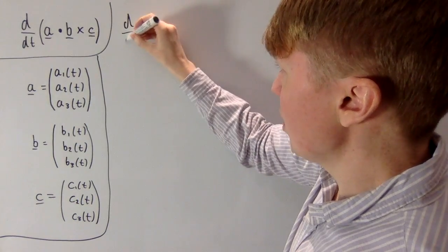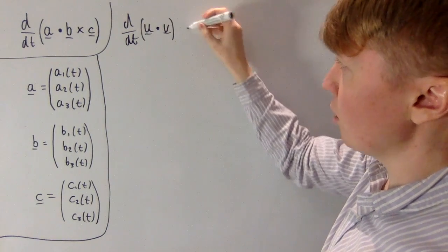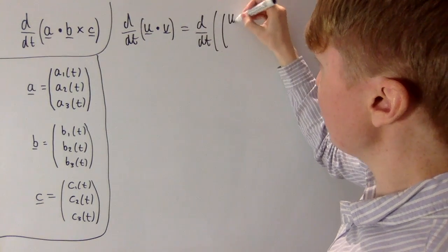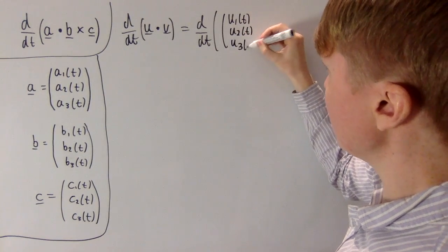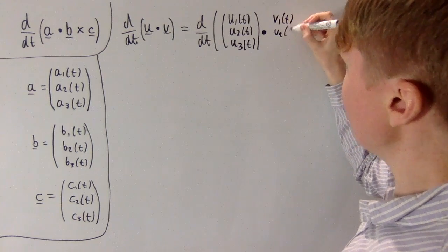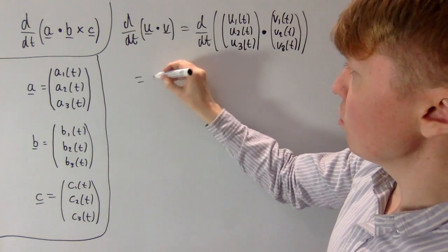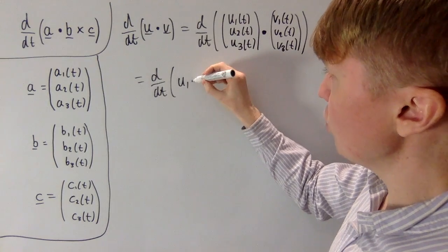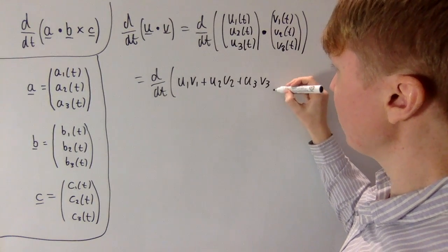Let's introduce two generic vectors u and v, and differentiate their dot product. Just like a, b, and c, u and v are 3D vectors depending on parameter t. So we have u = (u1(t), u2(t), u3(t)) and v = (v1(t), v2(t), v3(t)). Taking the dot product gives u1·v1 + u2·v2 + u3·v3, and we differentiate this expression with respect to t.